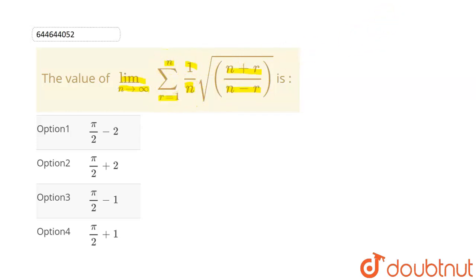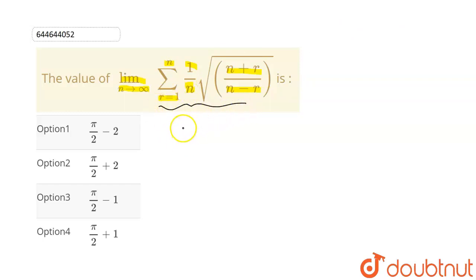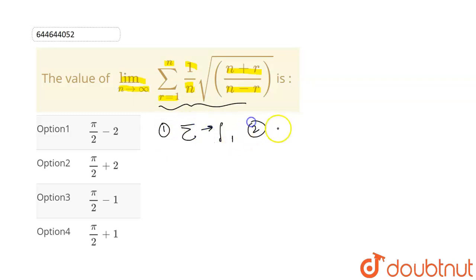This is a question of integration as a limit of sum. To solve this type of question, we make some changes to convert the limit n tends to infinity into an integration. The first change is: we change summation to integration. The second change is: we take r/n as x and 1/n as dx.